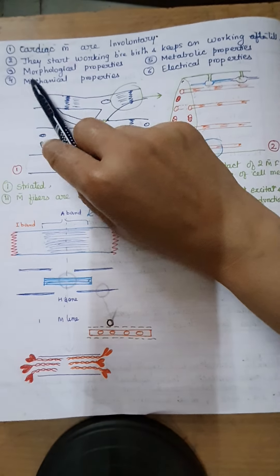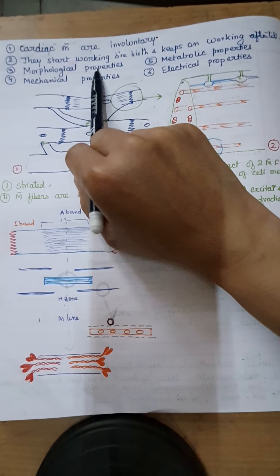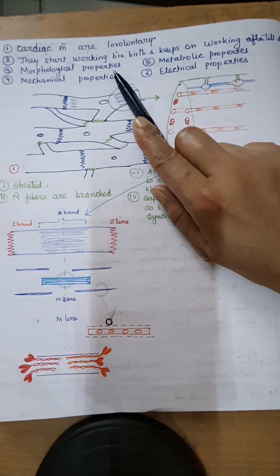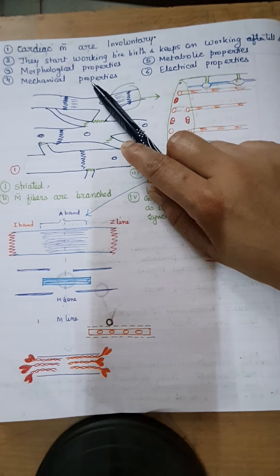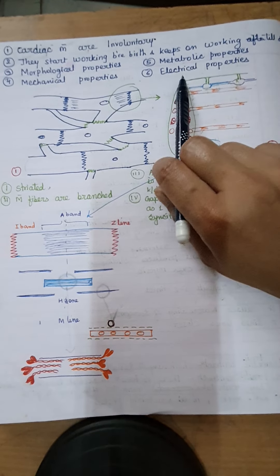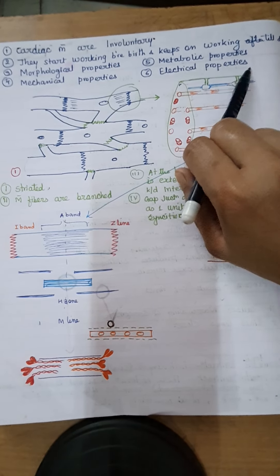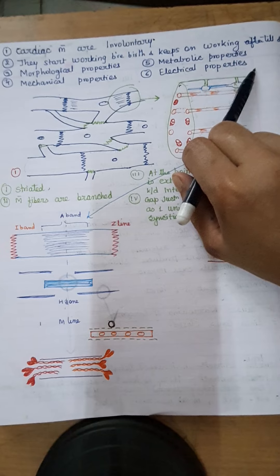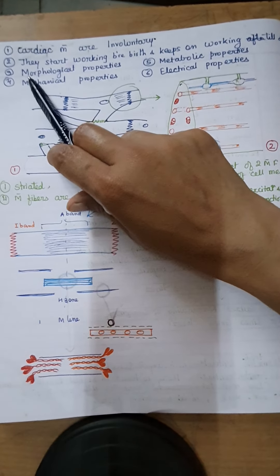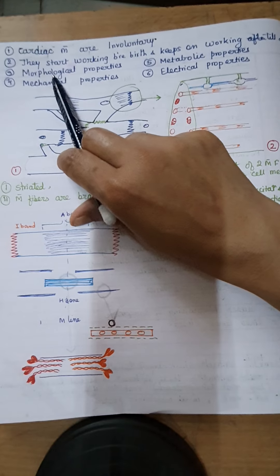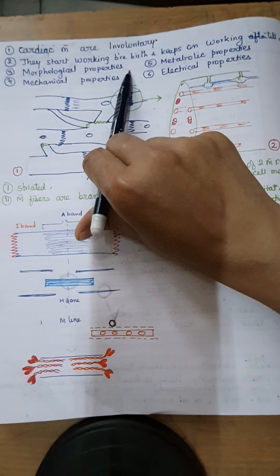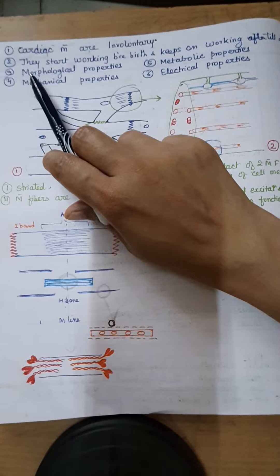The third property is the morphological or structural property of the cardiac muscle. Next is the mechanical property, then the metabolic property, and the last is the electrical property. In this lecture, I will cover the morphological or structural property of the cardiac muscles.